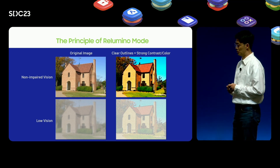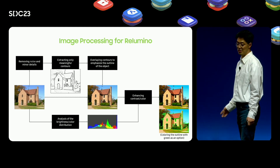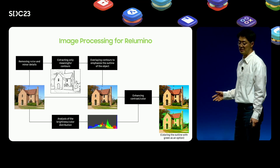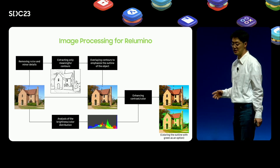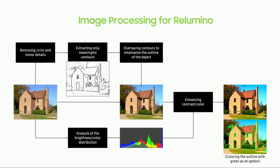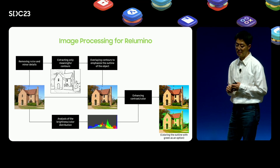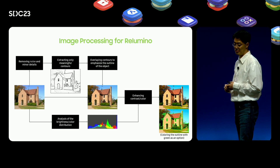This is the principle of Rilumino mode. The Rilumino algorithm aims to maximize local contrast sensitivity and color contrast around the object. First, we use a smoothing filter to remove noise and minor details from the input image. After this process, only meaningful contour components for image understanding can be extracted. These extracted contours are overlaid on the original image to emphasize the outline of the object. At this time, the outline of the object may be expressed in green color to further increase visibility.